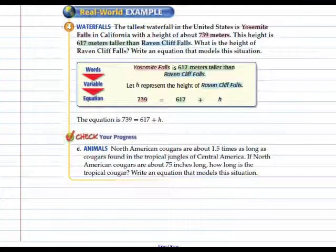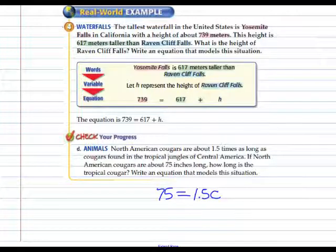North American cougars are about 1.5 times as long as cougars found in the tropical jungles of Central America. If North American cougars are about 75 inches long, how long is the tropical cougar? If c represents the length of the tropical cougar, we would multiply that by 1.5 to indicate that 75 inches, representing the length of North American cougars, is 1.5 times as long as c.